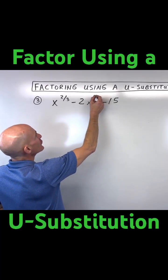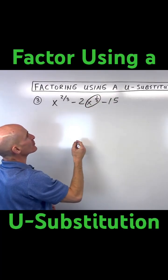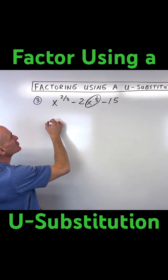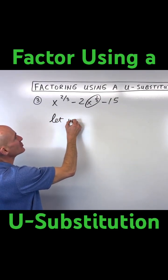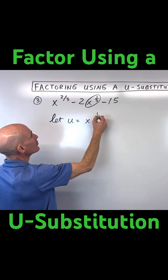Got this kind of weird group here, like this x to the 1/3. So what I could think about is doing a u-substitution. I could say, let u equal x to the 1/3.